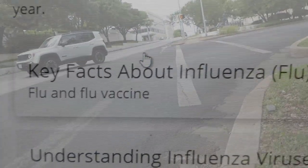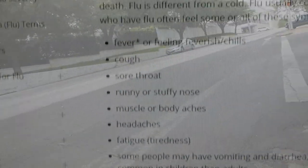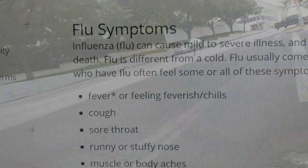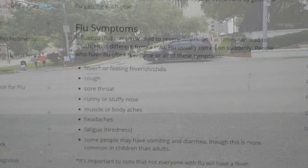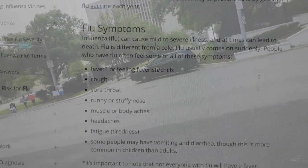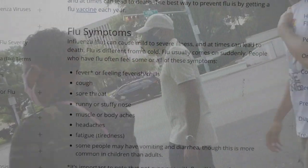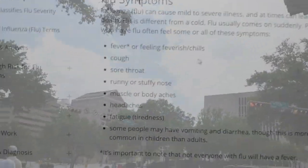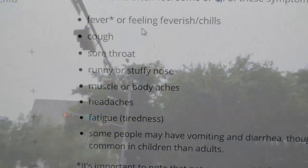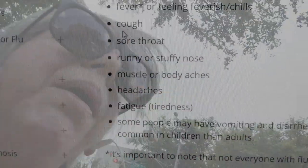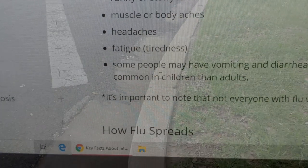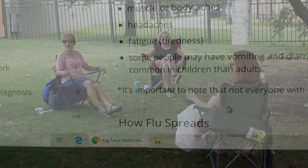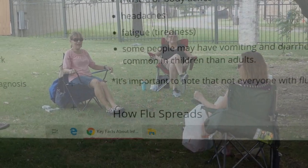Here are some key facts about influenza. Influenza can cause mild to severe illness and sometimes can lead to death. Flu is very different from a cold — flu comes on suddenly. People who have flu feel some or all of these symptoms: fever or feeling feverish, chills, cough, sore throat, runny or stuffy nose, muscle or body aches, headache, fatigue, vomiting, and diarrhea, especially in children.